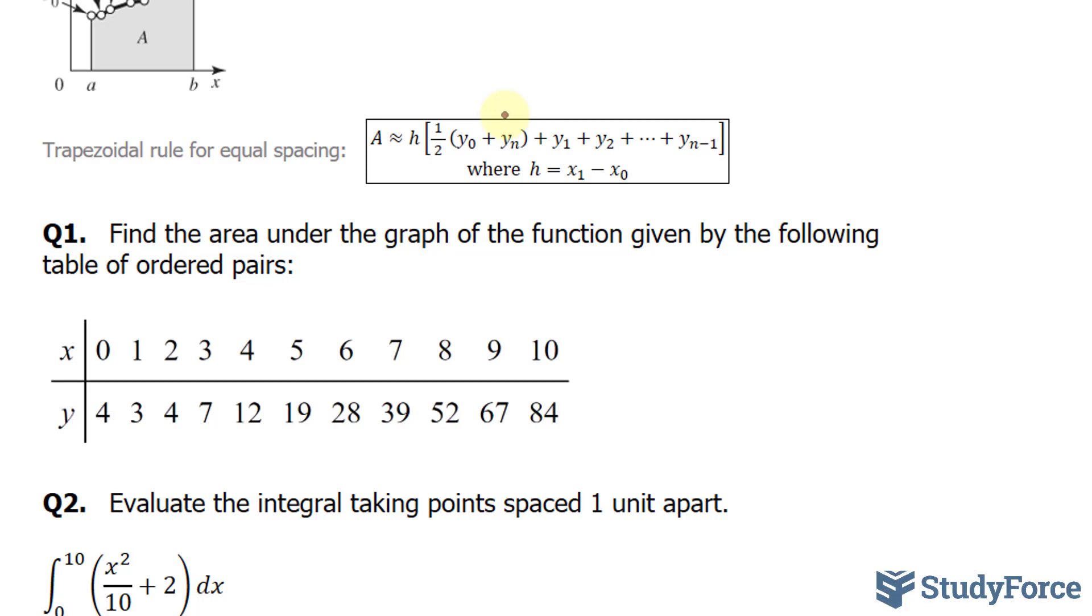So to use this formula, you have to read it carefully. It says that we have to find y0, which is the y-coordinate of your first observation, and we add it to the last observation. And our n value here is 1, 2, 3, 4, 5, 6, 7, 8, 9, 10, 11. n is equal to 11.